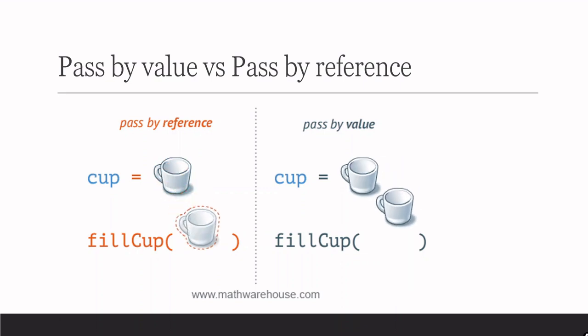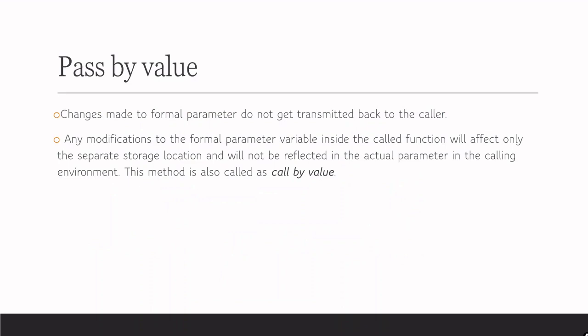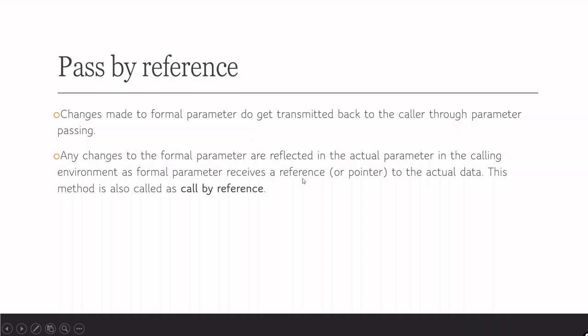Changes made to the formal parameter do not get transmitted back to the caller in case of pass by value — this method is called call by value. In pass by reference, any changes to the formal parameter are reflected in the actual parameter in the calling environment, as the formal parameter receives a reference or pointer to the actual data. This method is called call by reference.